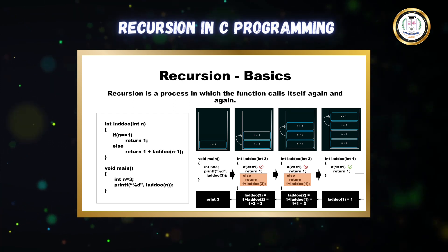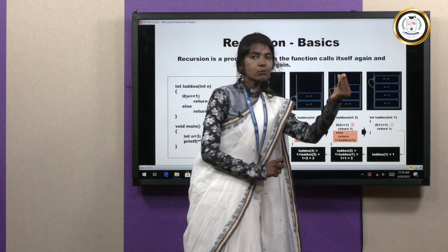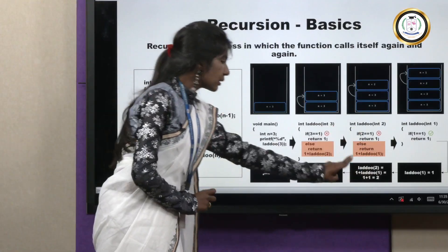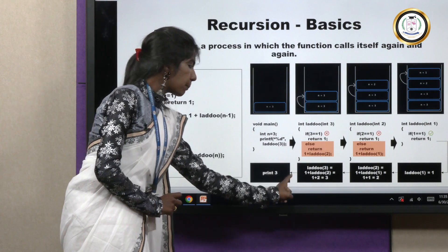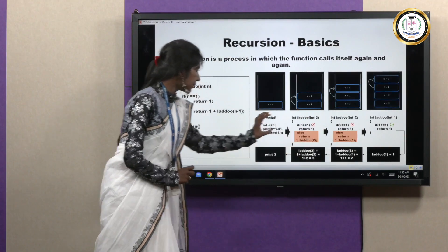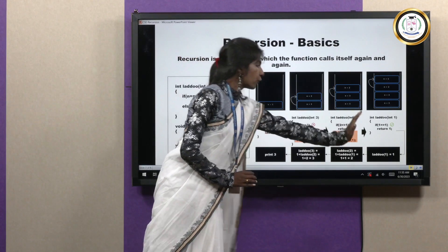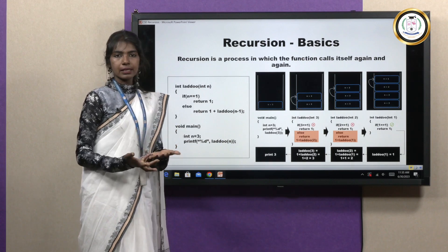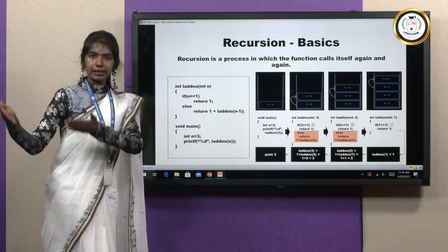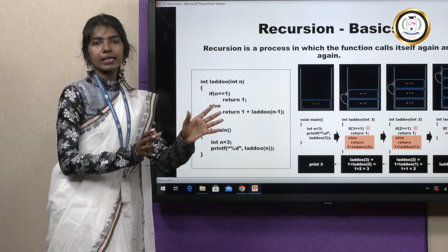The result is returned: laddu(2) equals 1 plus laddu(1). We know the answer for laddu(1) is 1 boondi, so laddu(2) equals 2. Then laddu(2) is returned to laddu(3), which is 1 plus laddu(2), giving 1 plus 2 equals 3. The final answer is returned and printed in the main function. This is the flow of recursion — we call the recursive function again and again, and once we get the output we return back and find the whole solution.